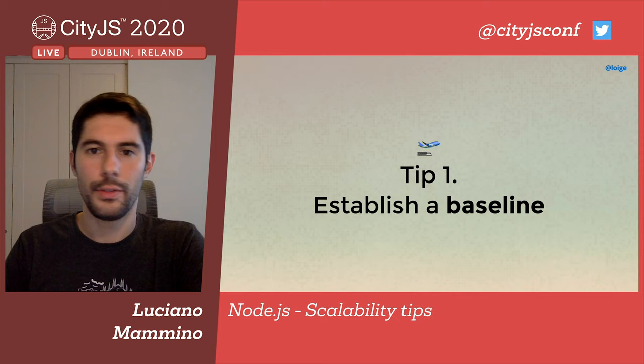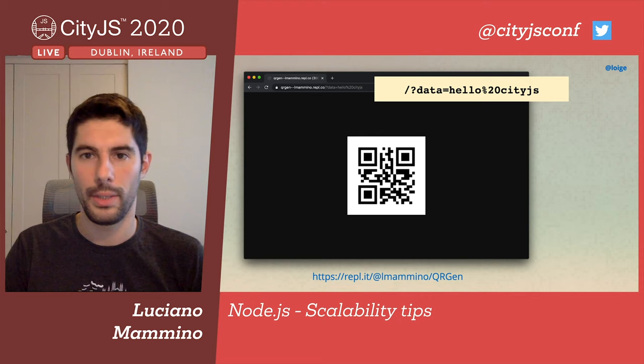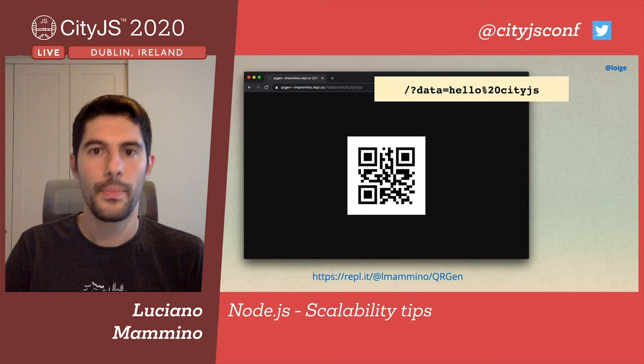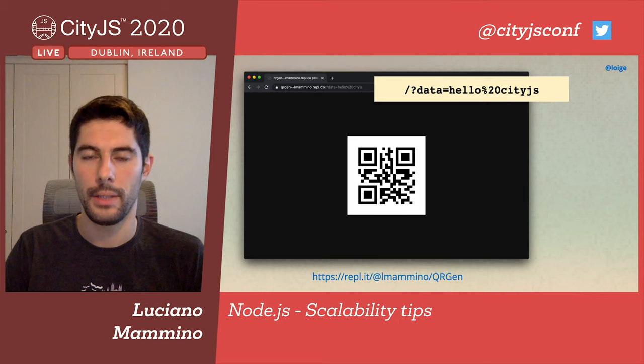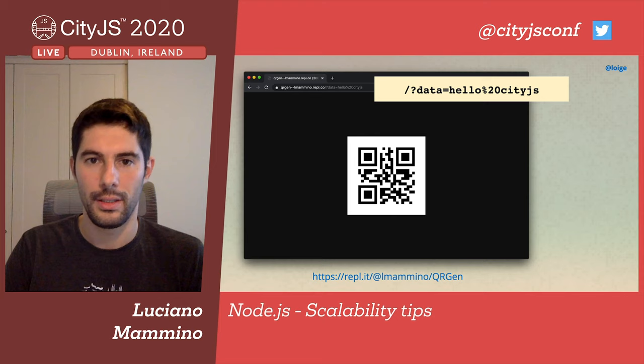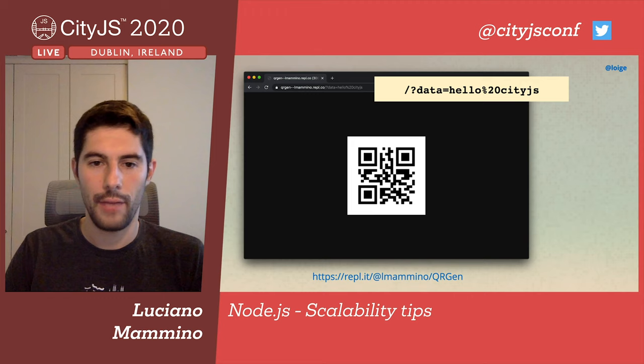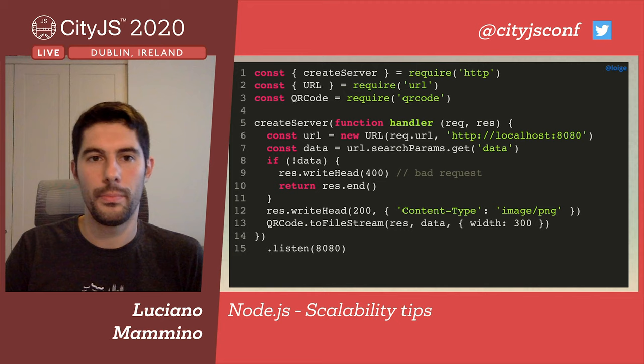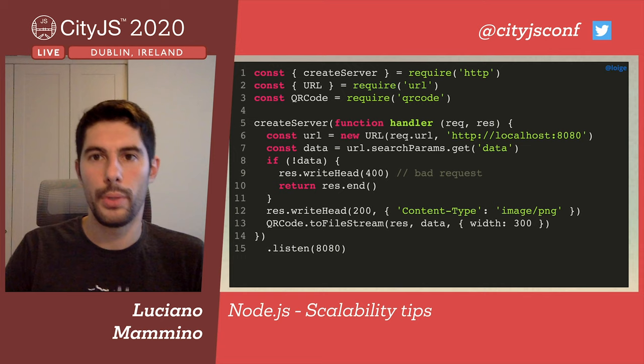The first tip is to establish a baseline. I built a very simple application — a web server that prints a QR code on your browser. You can pass it some data using a query string parameter called 'data', and the QR code will render that data. It's super simple and you can actually play with it live. The code is barely 15 lines.